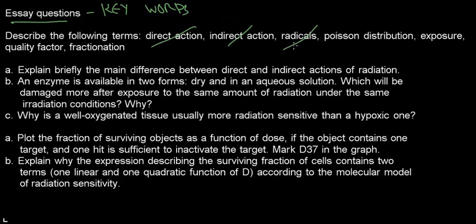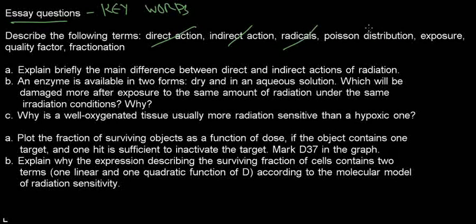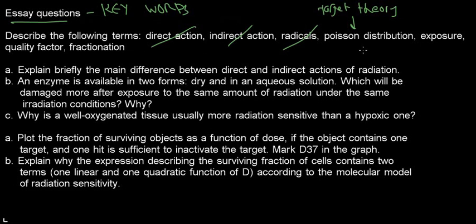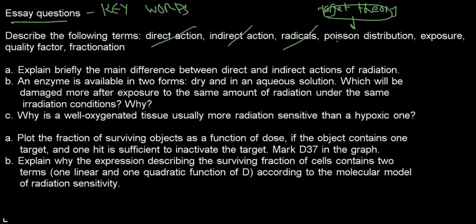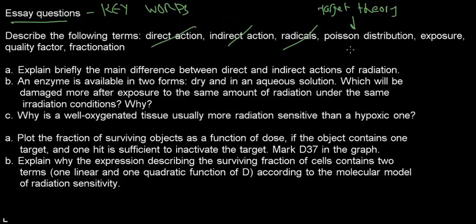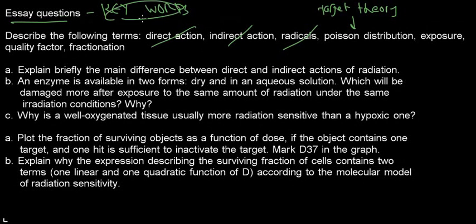Poisson distribution: this relates to target theory, which is a probabilistic theory about the probability of getting a certain number of hits in a radio-sensitive volume. The target theory is statistically associated with the Poisson distribution. The Poisson distribution is a discrete probability distribution — it calculates the probability of a number of events occurring when you know a certain average. The key words are discrete probability distribution.